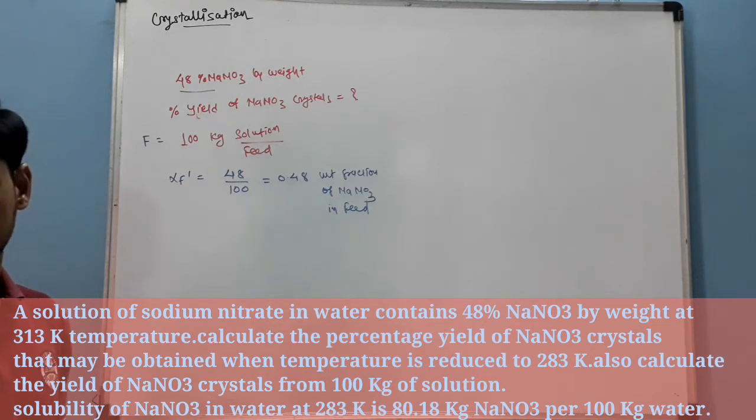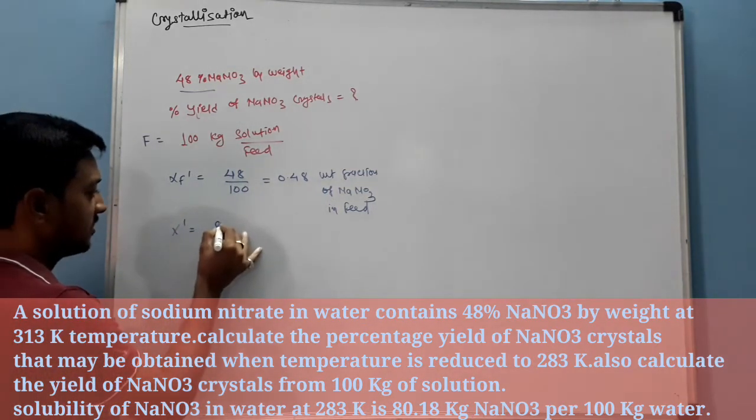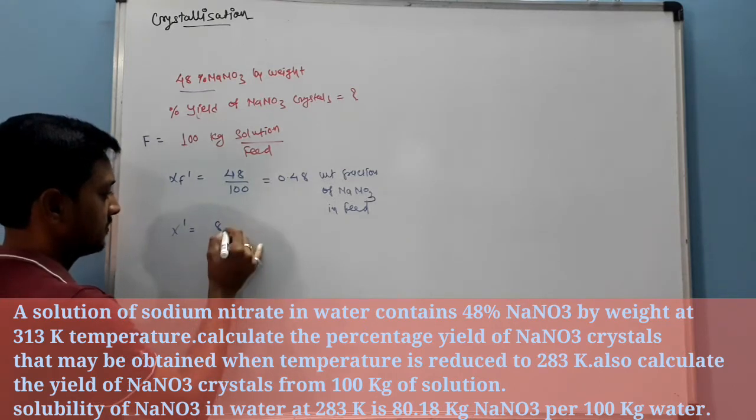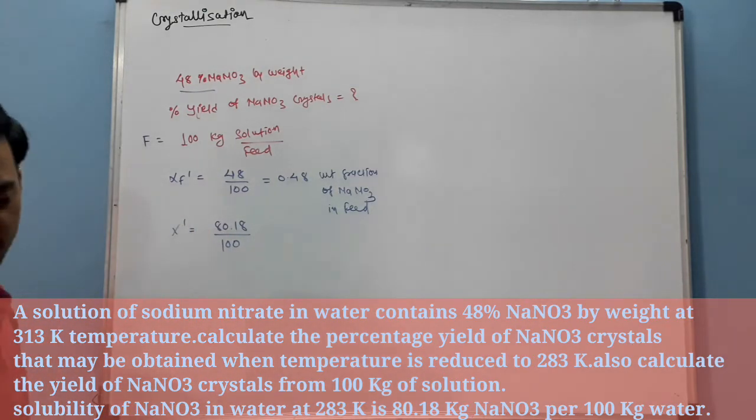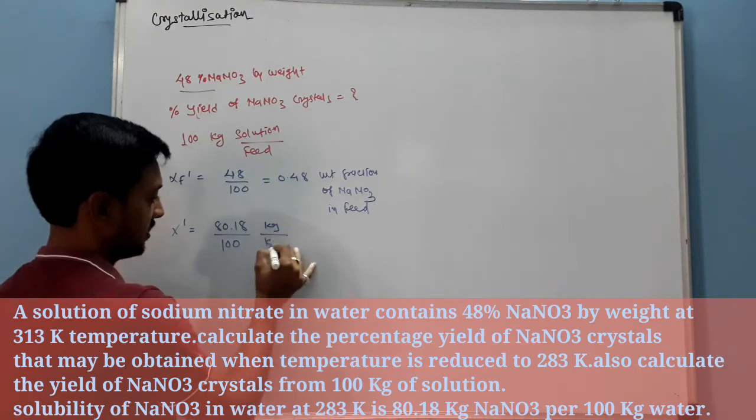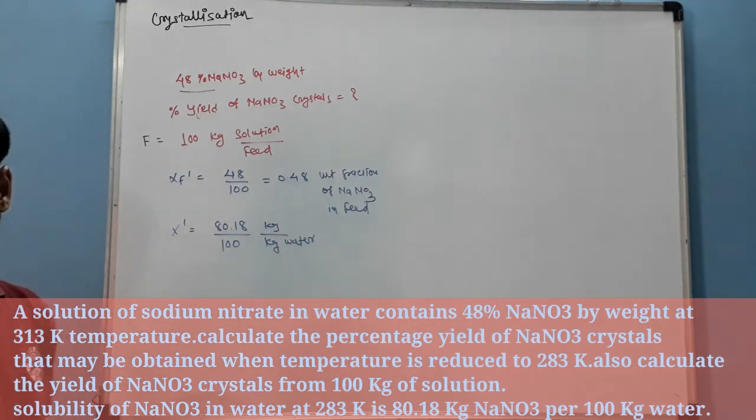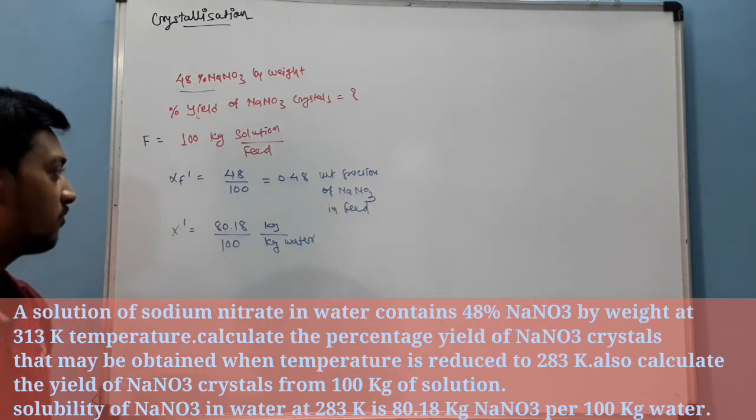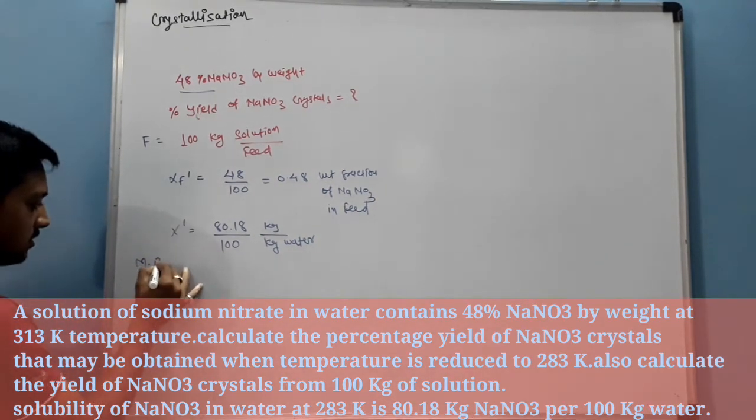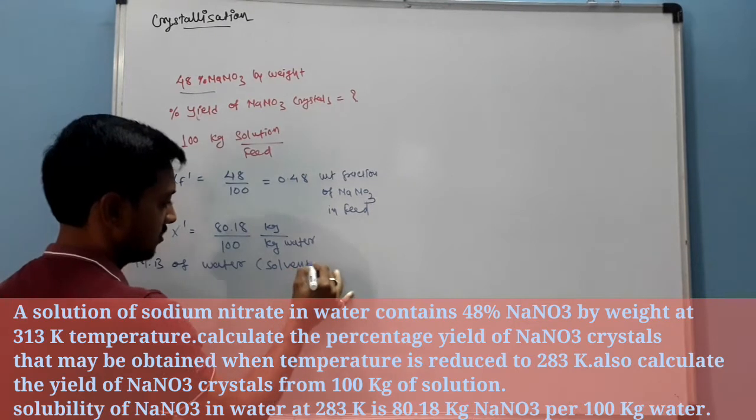Let's do material balance. One data is there: X dash solubility 80 divided by 100 kg per kg water. Now let's start with solvent. Solvent is water, so material balance of water, that means solvent.